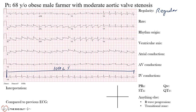If you multiply 10 seconds by 6 you get 60 seconds, which is one minute. Count the complexes going across and multiply by 6 to get an estimate of the rate in beats per minute. You can use P waves for the atrial rate or QRS complexes for the ventricular rate — we'll use QRS complexes here.